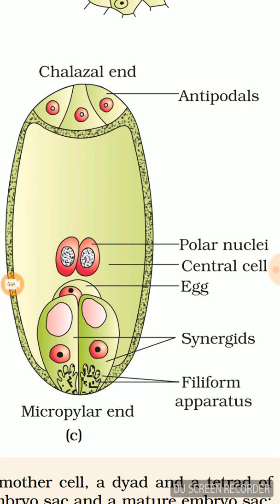Now let's see the parts of the ovary. The ovary contains an ovule, and inside the ovule there are two major ends: the chalazal end and the micropylar end. In the micropylar end, we can see an egg and two synergids, which constitute the egg apparatus, also called the filiform apparatus. There are also two polar nuclei present at the center, also known as the central cell.